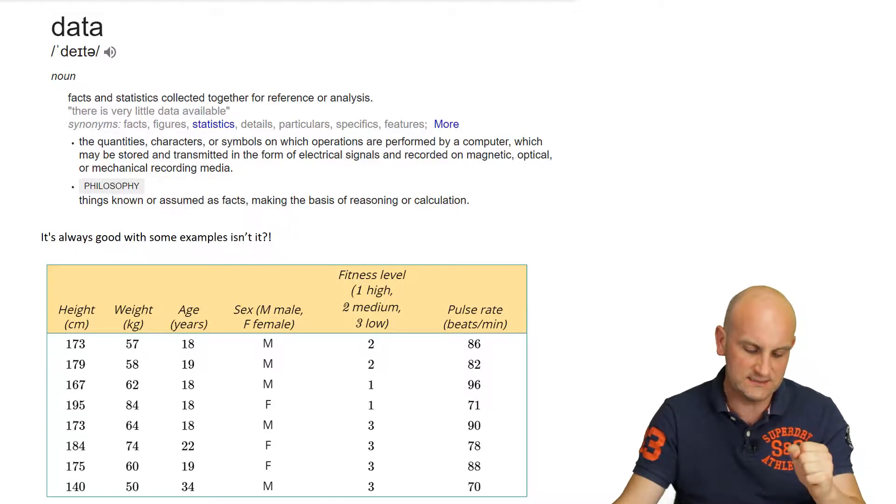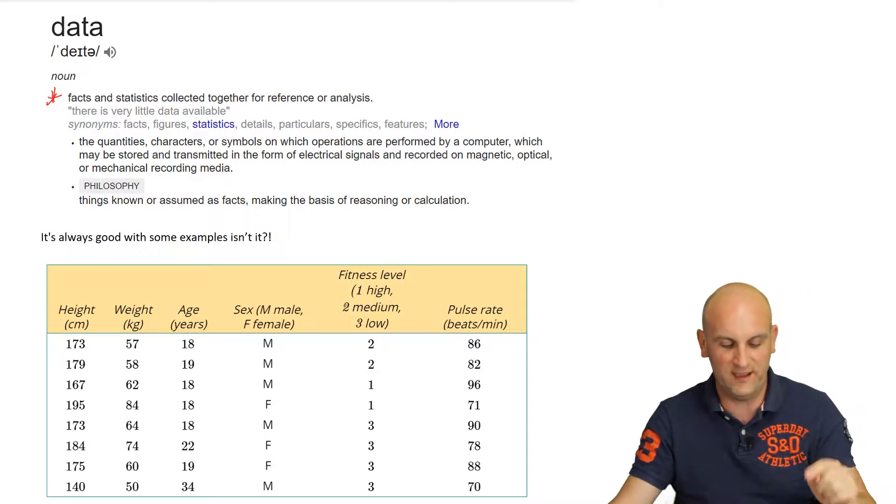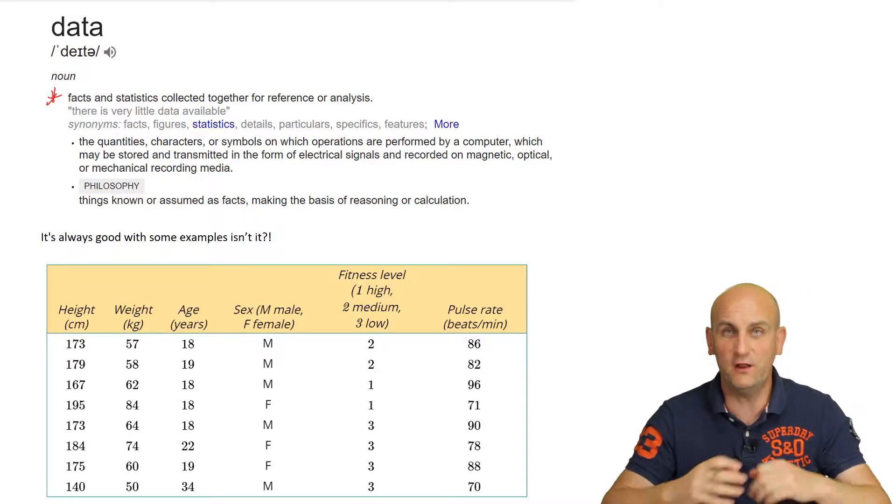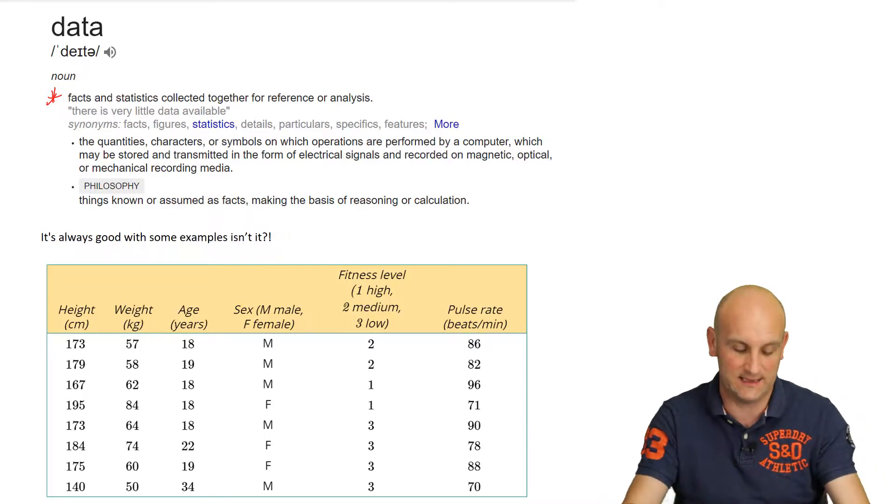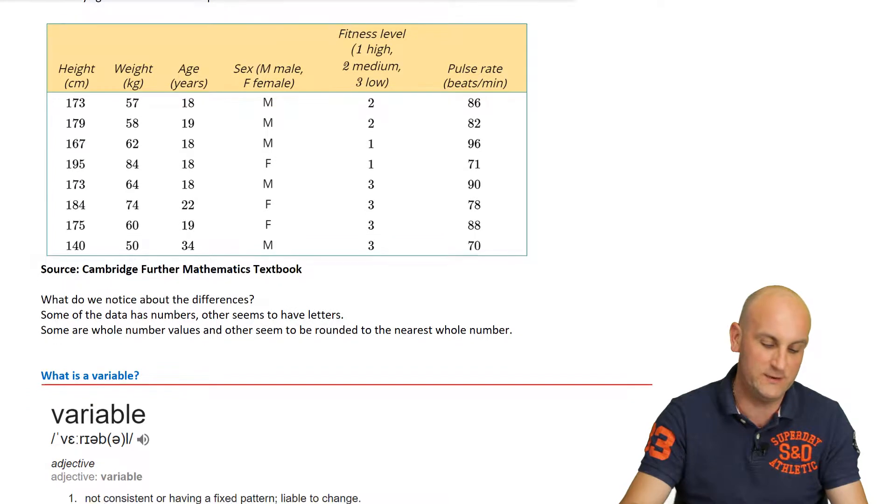Okay, dokey. The quantities, characters, or symbols on which operations are performed by a computer, which may be stored or transmitted in the form of electrical signals and recorded on magnetic... Okay, dokey. I think I'm going to go back to that first one. I think in this situation here that's probably the useful one for me. Facts and statistics collected together for reference or analysis. So data is basically stuff that we can collect. And wouldn't it be great if we had an example with a table in it? And we do.